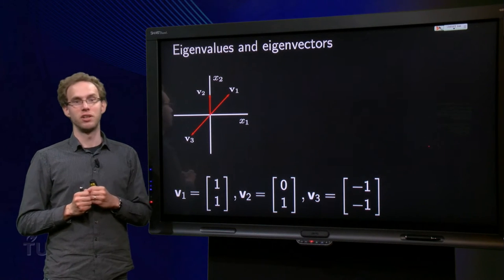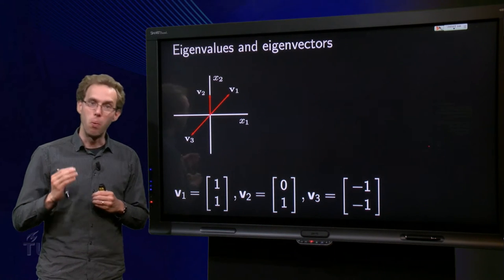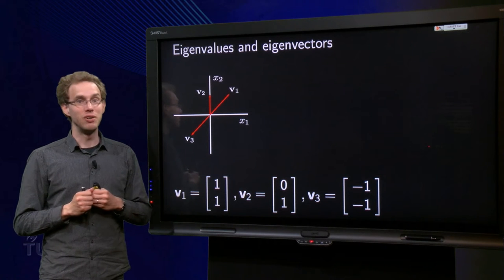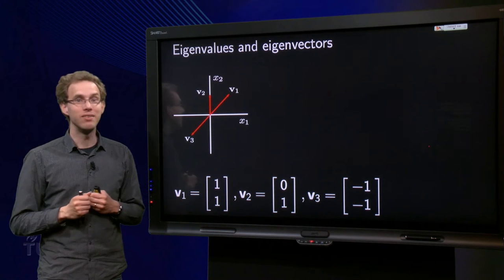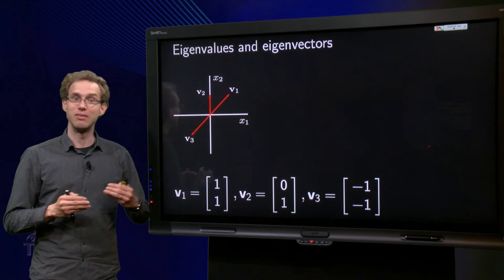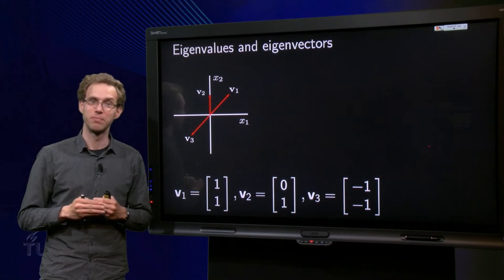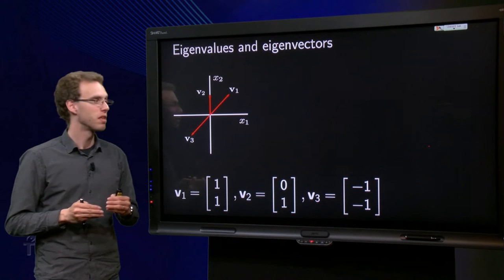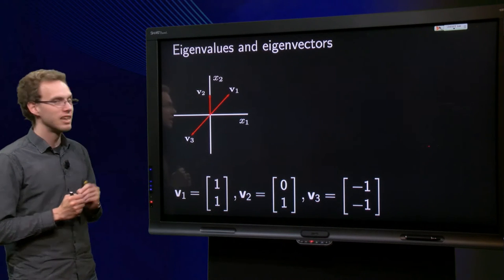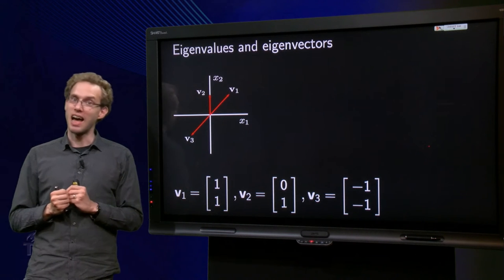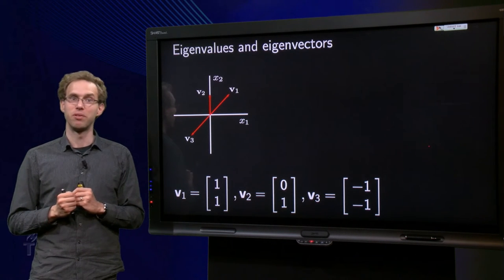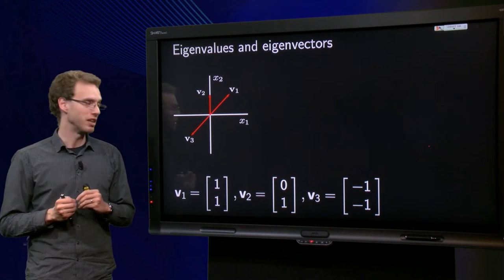First things first — what do we actually mean by eigenvalues and eigenvectors? Let's look at an example for a 2x2 matrix.